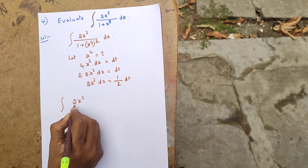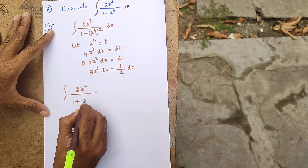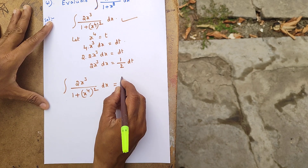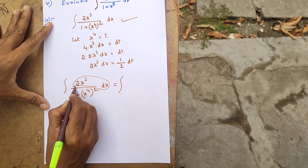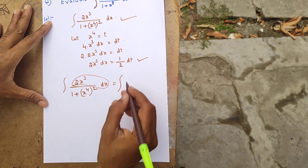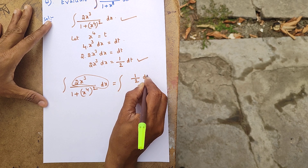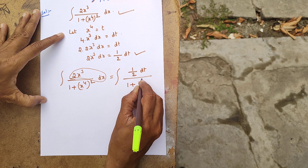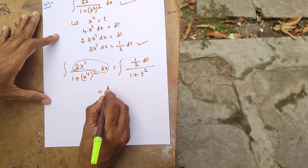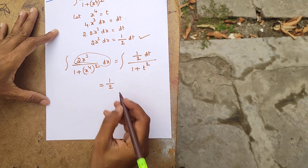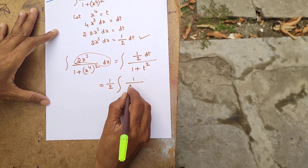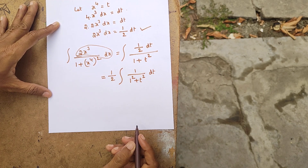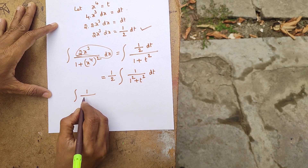The integral of 2x³ divided by (1 plus x to the power 4) whole squared becomes one-half times the integral of 1 divided by (1 plus t) squared dt. The constant 1 by 2 is taken outside.